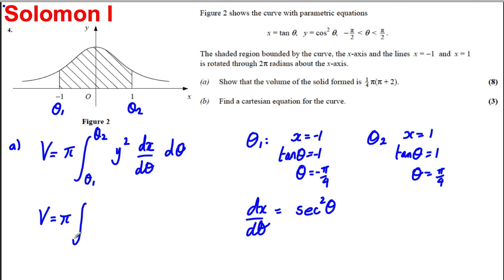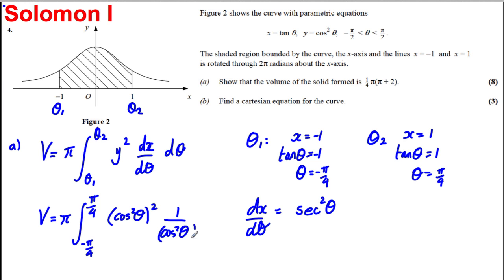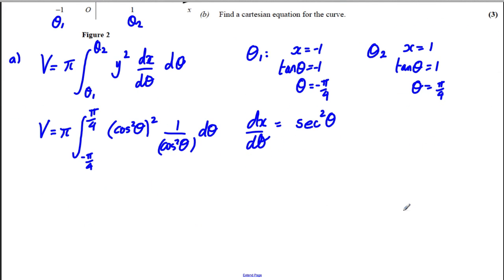So it's pi times the integral between negative pi by 4 and pi by 4 of y squared — which is cos squared theta squared — multiplied by sec squared theta, which is 1 over cos squared theta, d theta. We've got cos squared squared over cos squared, so we're simply going to have cos squared theta d theta.